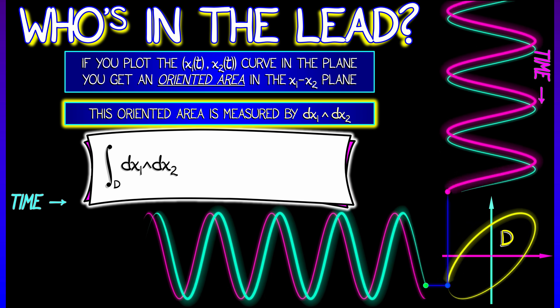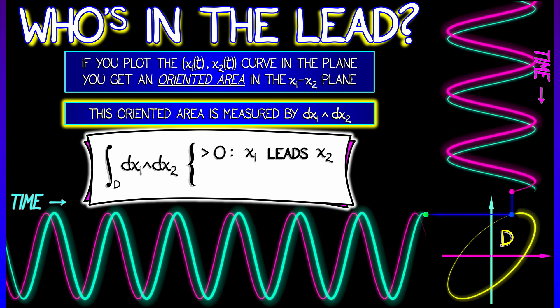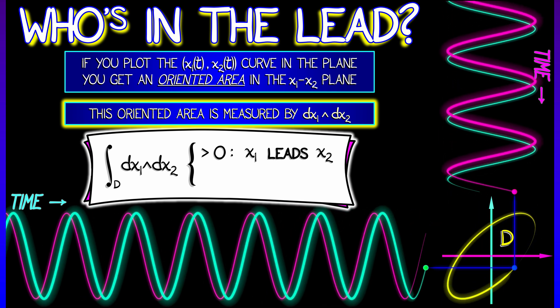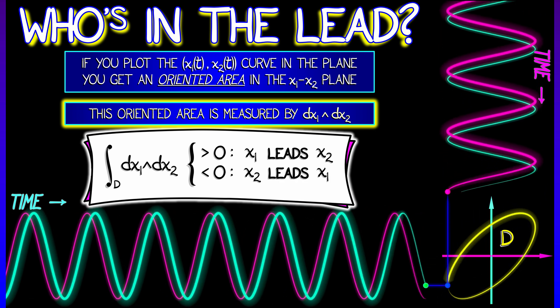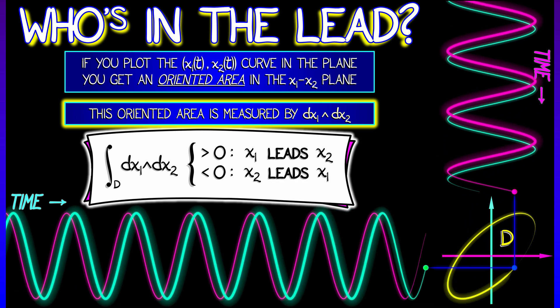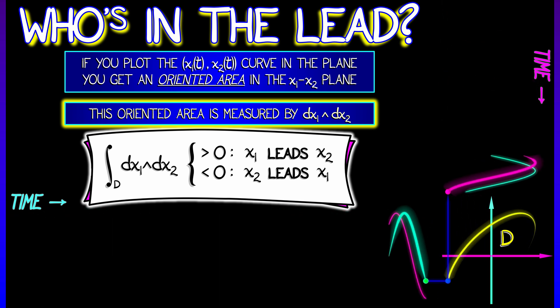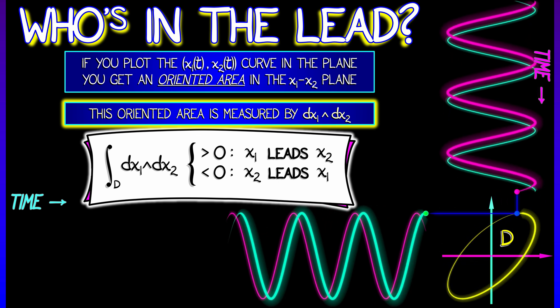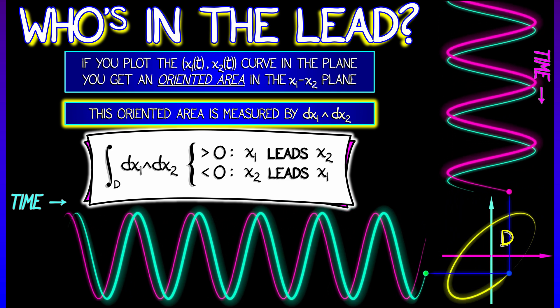If that integral is positive, then that means that x1 leads x2. It's slightly ahead of it. Whereas if that oriented area, the integral of that two-form, is negative, then that means that x2 is ahead and x1 is behind. And if that integral is zero, or close to zero, then that means that they're close to being perfectly in phase or perfectly out of phase.